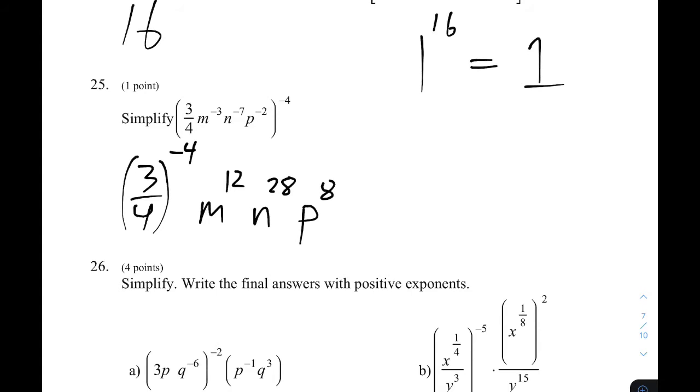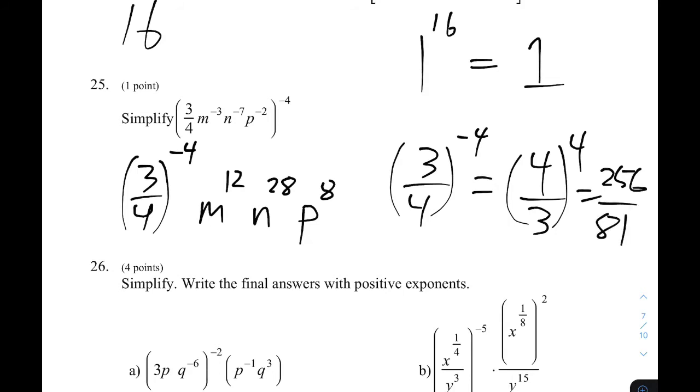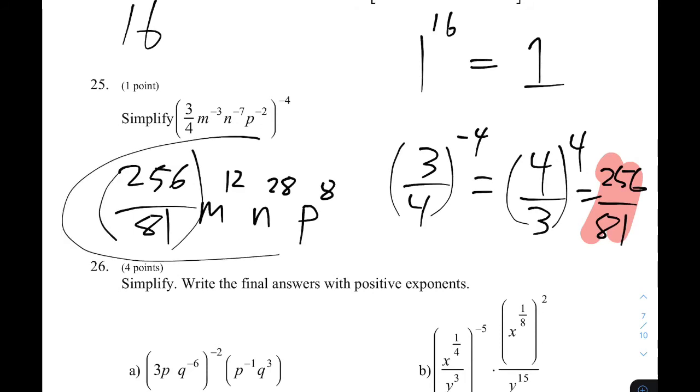So M, N, and P are already nice. And all I have to do is deal with this 3 quarters to the negative 4. 3 quarters to the negative 4 is the same as 4 thirds to the 4th power. The negative sign means flip that. And that's 4 times 4 times 4 times 4. And 4 to the 4th power is 256. And 3 times 3 times 3 times 3. And 3 to the 4th power is 81. So instead of this 3 quarters to the negative 4, I'll just actually take it through and say, okay, that's all worth 256 over 81. So I have 256 over 81 times M to the 12, N to the 28, P to the 8. And that's all I can do with that.